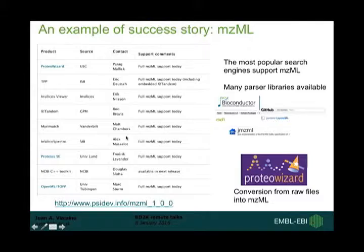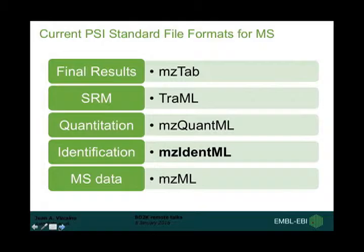The stable version is 1.1, released in June 2009, and the original publication was published in Nature Chemical Biology in 2011. It really represents a success story, with many implementations and a lot of open source software. Probably the most popular is ProteoWizard, which enables conversion from raw files from different vendors into mzML. There are also Java libraries, Bioconductor libraries, and more. At this URL you can find the full list of mzML implementations.